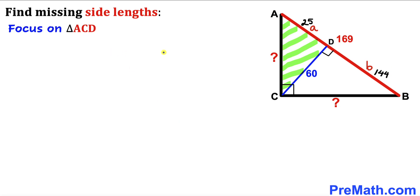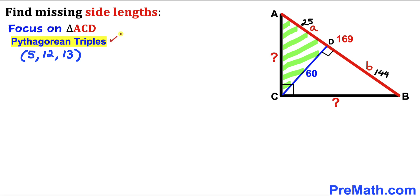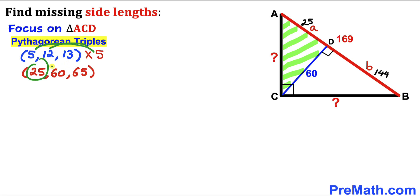Now let's focus on right triangle ACD and recall the Pythagorean triplet 5, 12, and 13. If we multiply all these numbers by 5, our new set of Pythagorean triplets becomes 25, 60, and 65. We can see we already have 25 and 60 in this triangle, so the missing side AC has got to be 65 units.